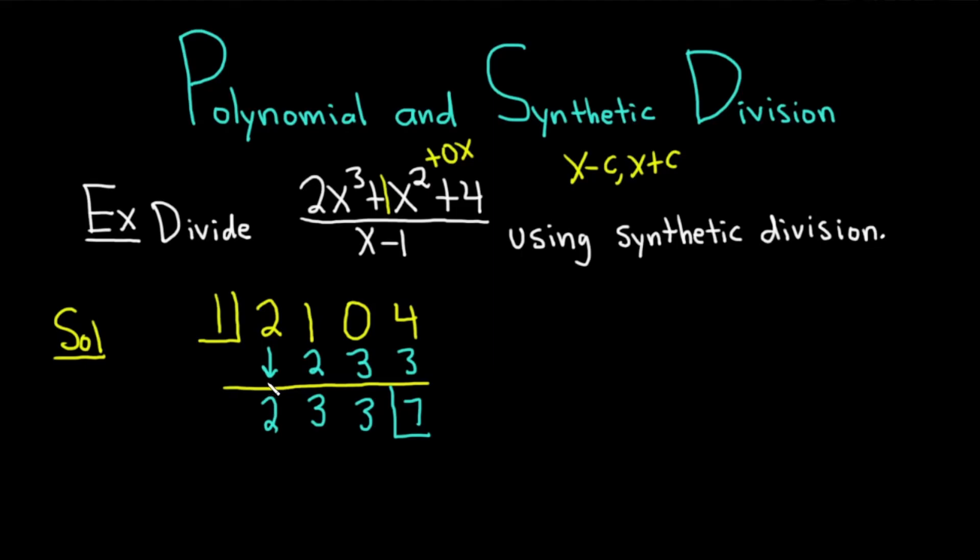Let's do it again. Bring down the 2. 2 times 1 is 2. 1 + 2 is 3. 3 times 1 is 3. 0 + 3 is 3. 3 times 1 is 3. 4 + 3 is 7.